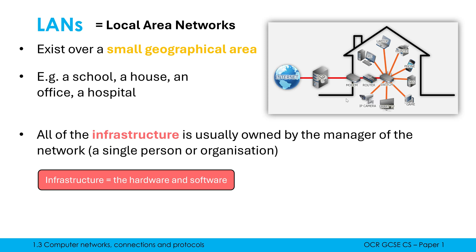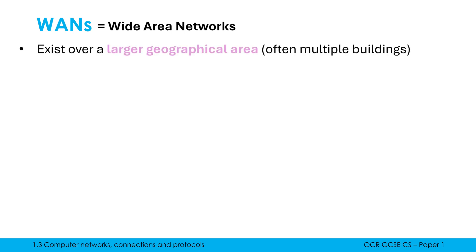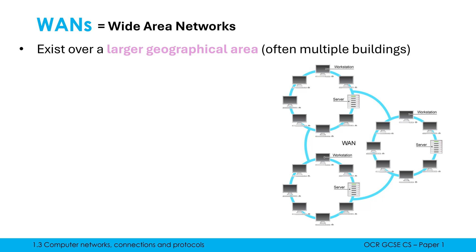This contrasts with a WAN, which is a Wide Area Network. This exists, shockingly, over a larger geographical area — typically multiple buildings, could be a city, could be a country, could be the world; we're thinking much, much bigger here. This diagram is showing maybe three LANs which are joined together to make a WAN.